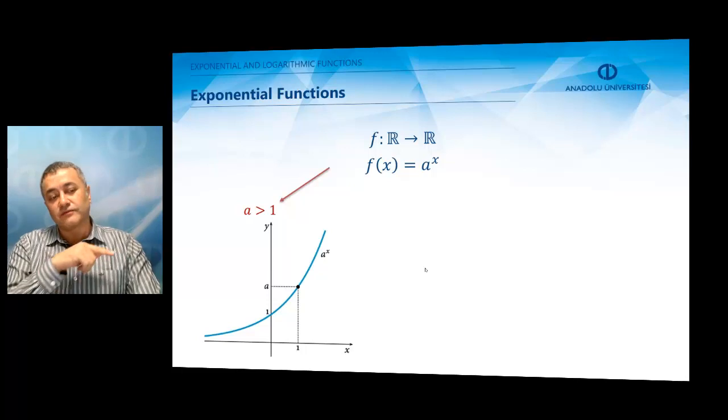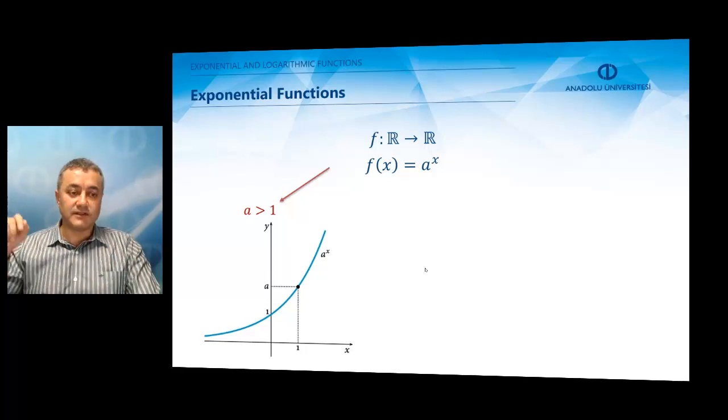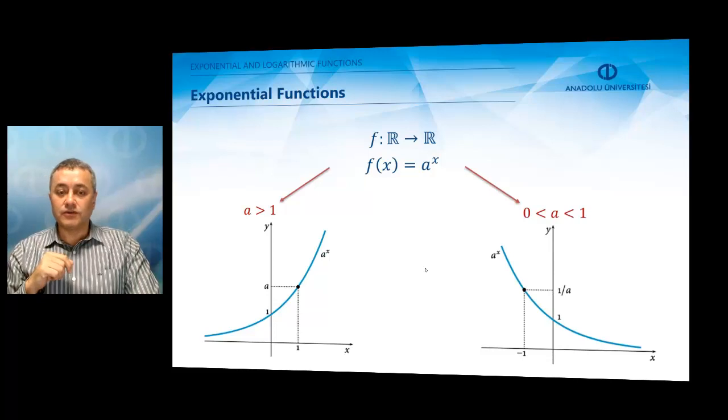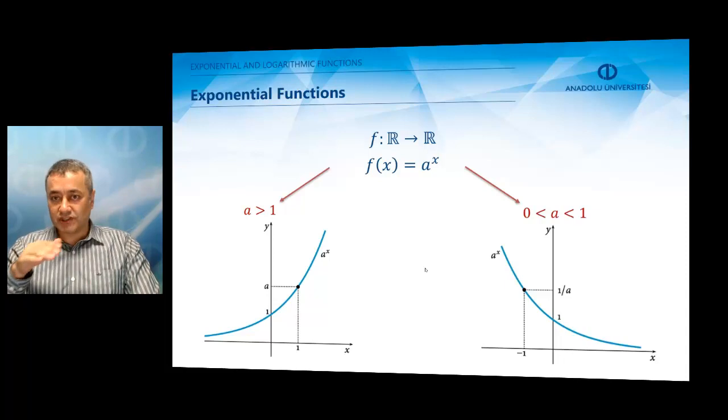The exponential function increases from minus infinity to plus infinity. And when a is between 0 and 1, the exponential function is a decreasing function, which decays as x gets bigger and bigger.